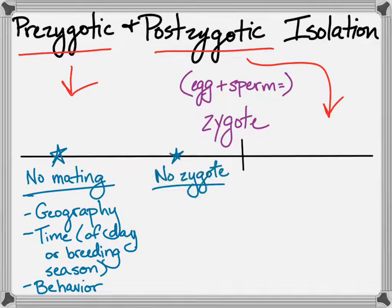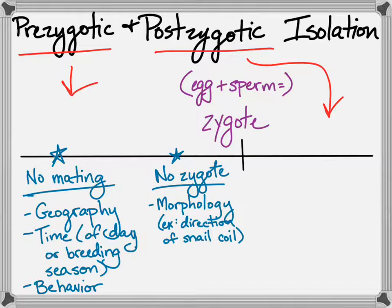The next category is no zygote. Maybe mating happens or mating is attempted, but because of morphology the mating is not successful. For example, snails can coil to the left or to the right, and if you're a left-coiled snail you cannot breed with a right-coiled snail. One little genetic switch of the coiling direction can isolate a whole section of the population.